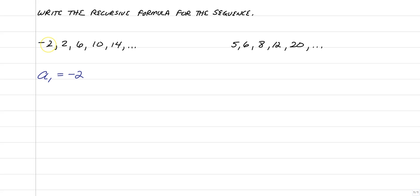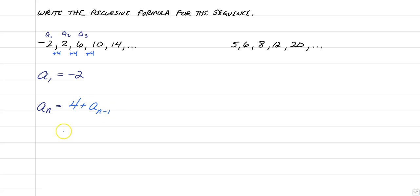Looking at the sequence, from negative 2 to 2 we add 4, from 2 to 6 we add 4, from 6 to 10 we add 4. This one is linear. So we are going to add 4 to the previous term, giving us a sub n equals 4 plus a sub n minus 1. You can also write it as a sub n minus 1 plus 4 — it doesn't really matter which order.